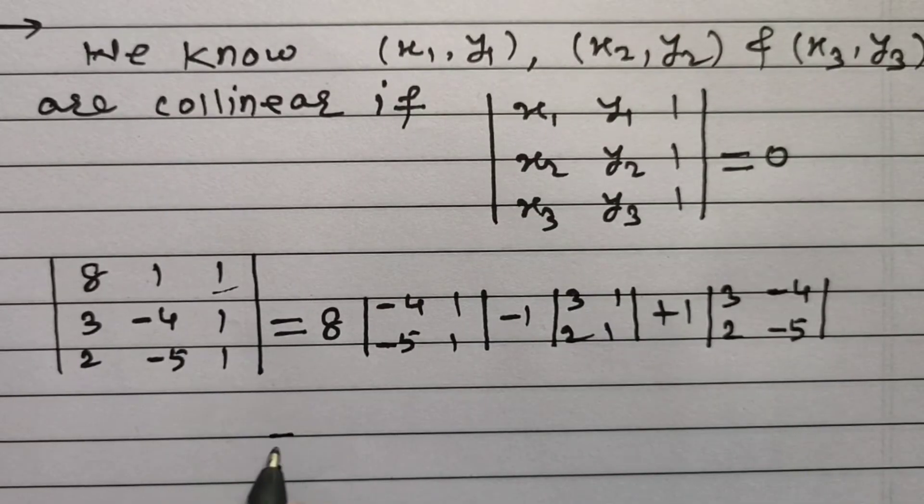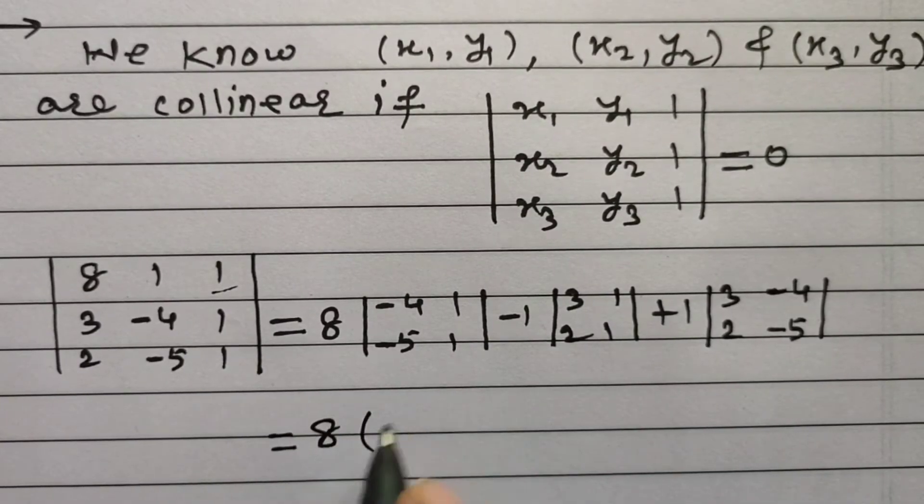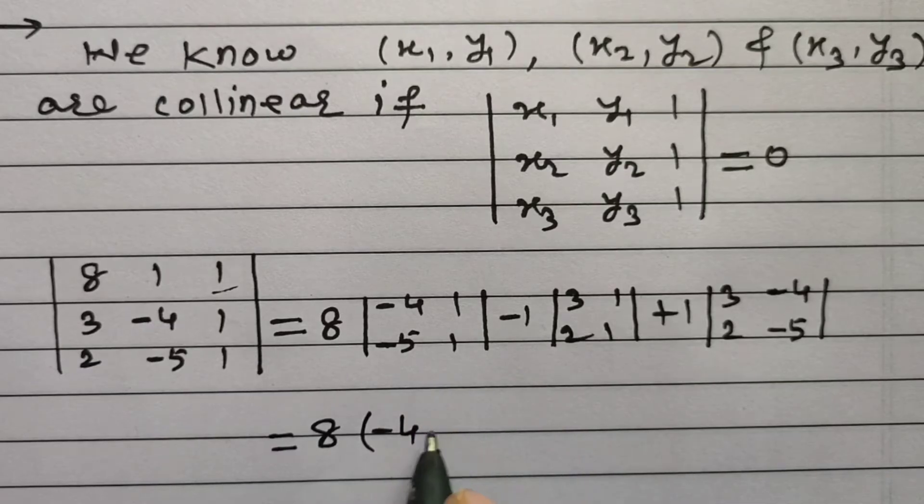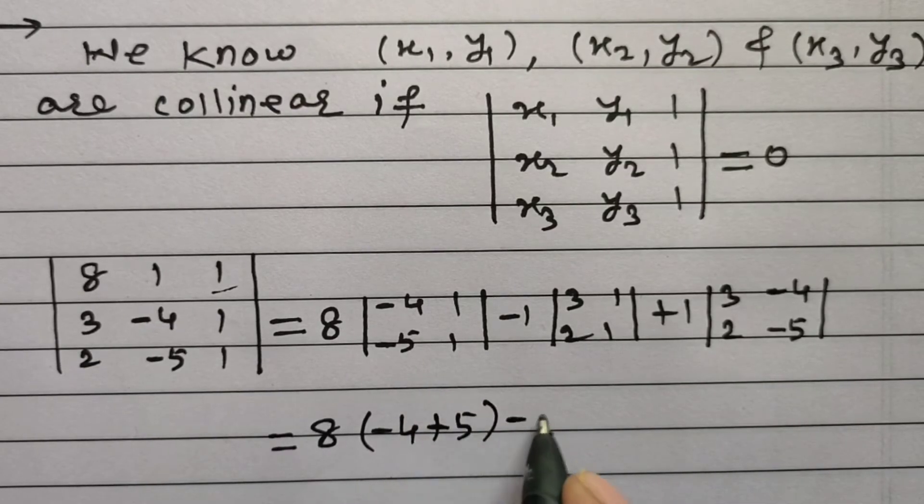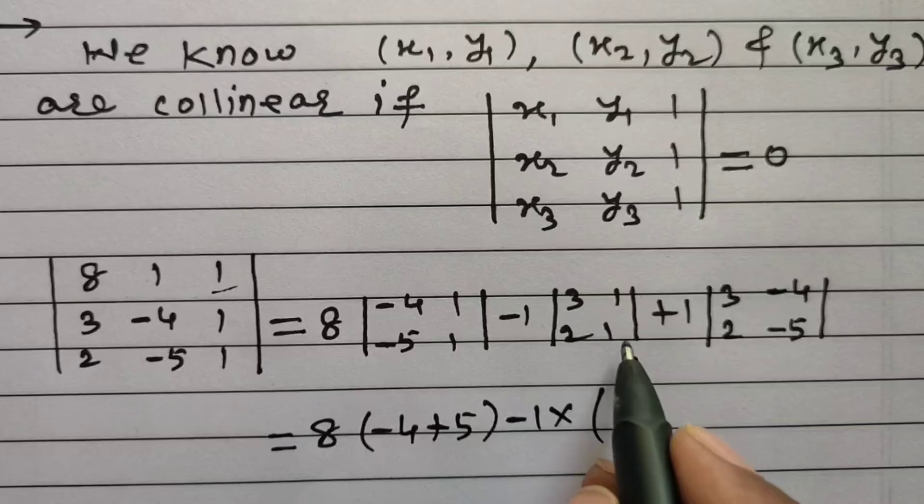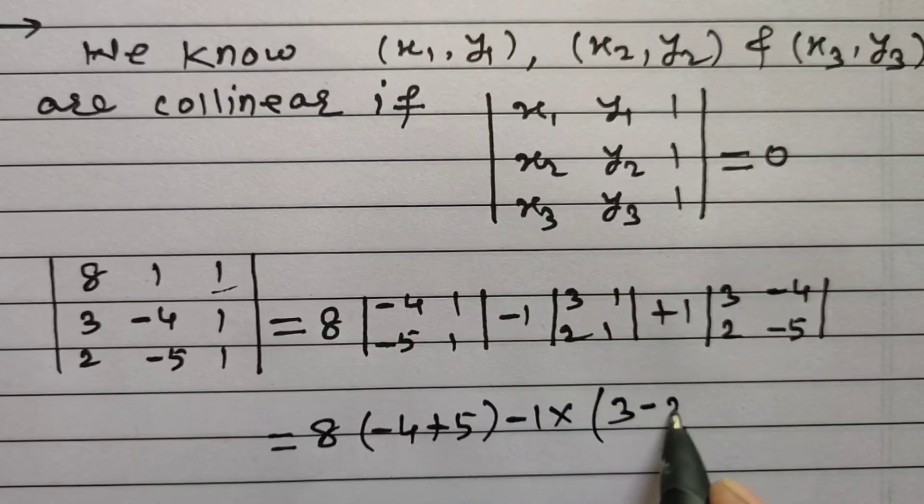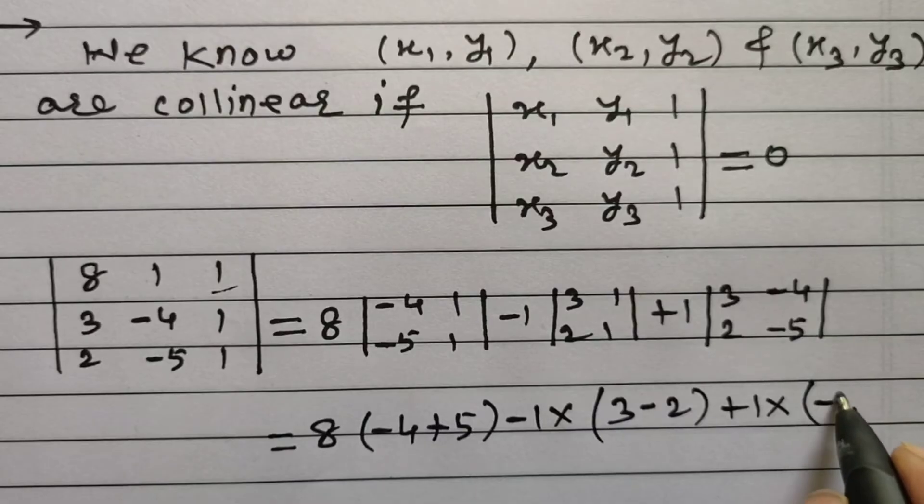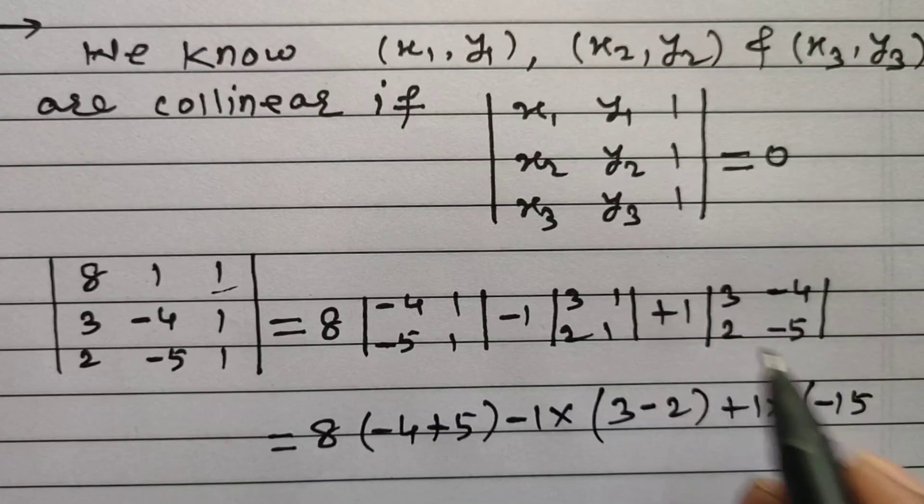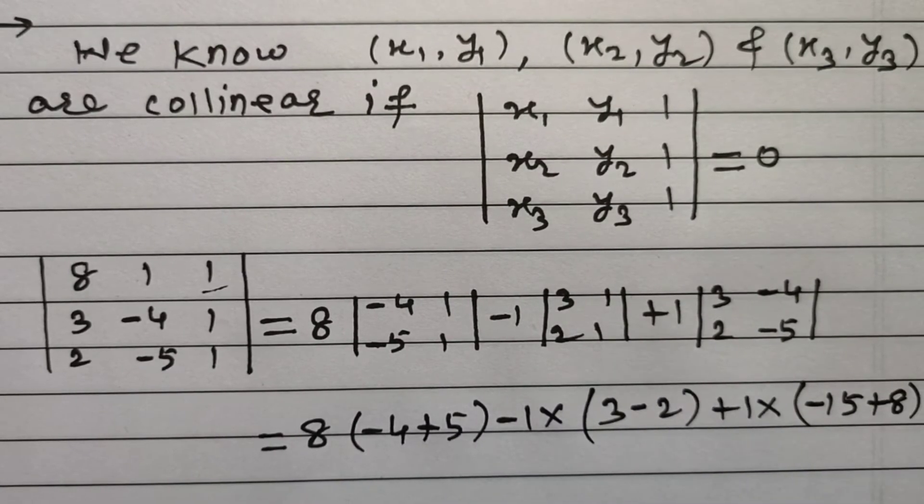This is equal to 8 into (-4 - 5), minus 1 into (3 - 2), plus 1 into (3 × -5 + 4 × 2), which is 8.